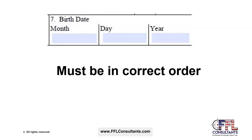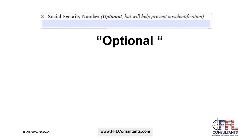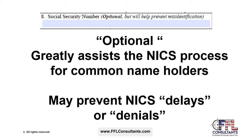Box 7 asks for the buyer's birthday in the correct order of month, day, and year. Be alert to international purchasers as they may not follow that sequence when first looking at the form. Box 8 asks for a social security number, which is listed as optional, but providing it greatly assists the NICS process for common name holders such as Smith and may prevent NICS delays or denials.